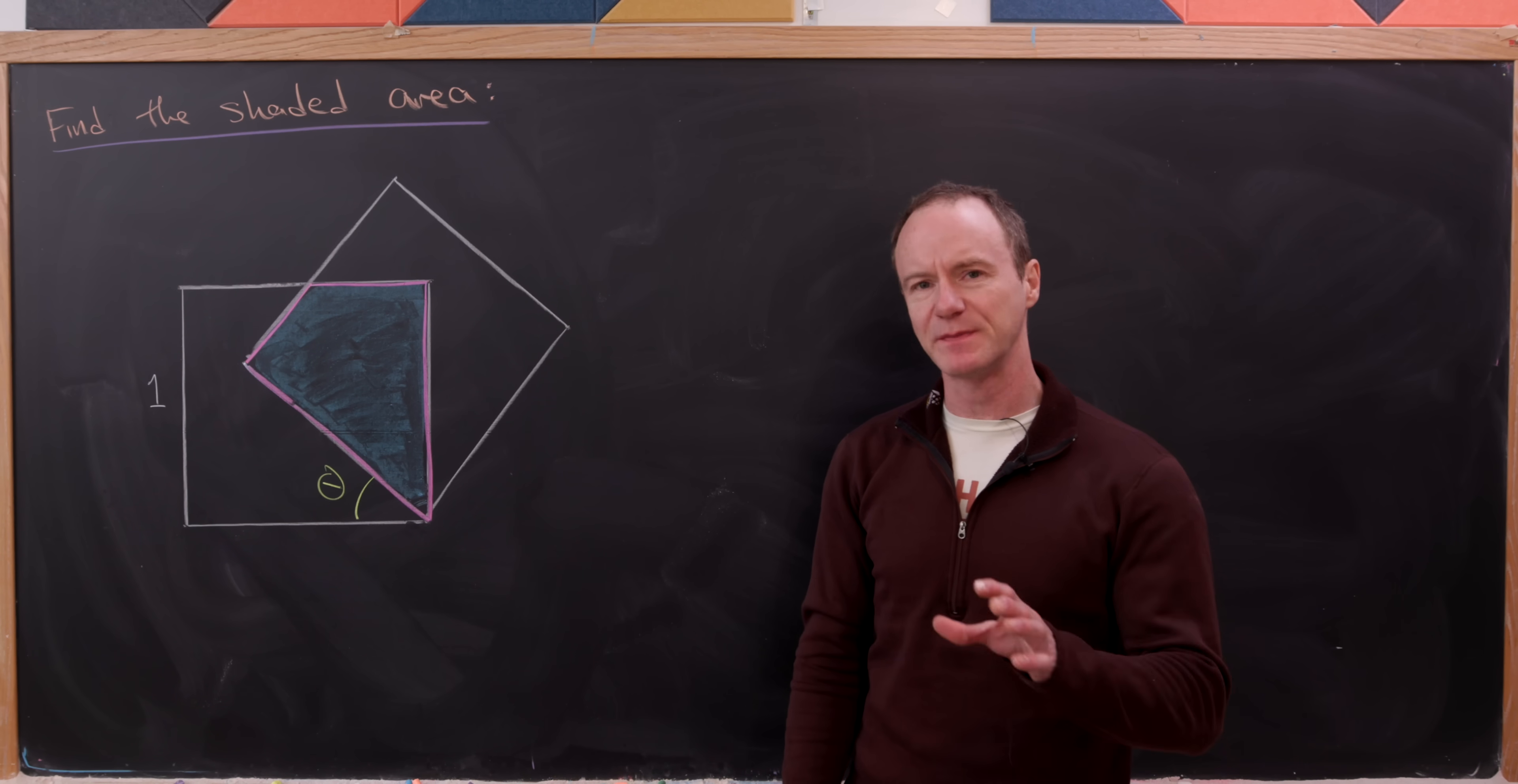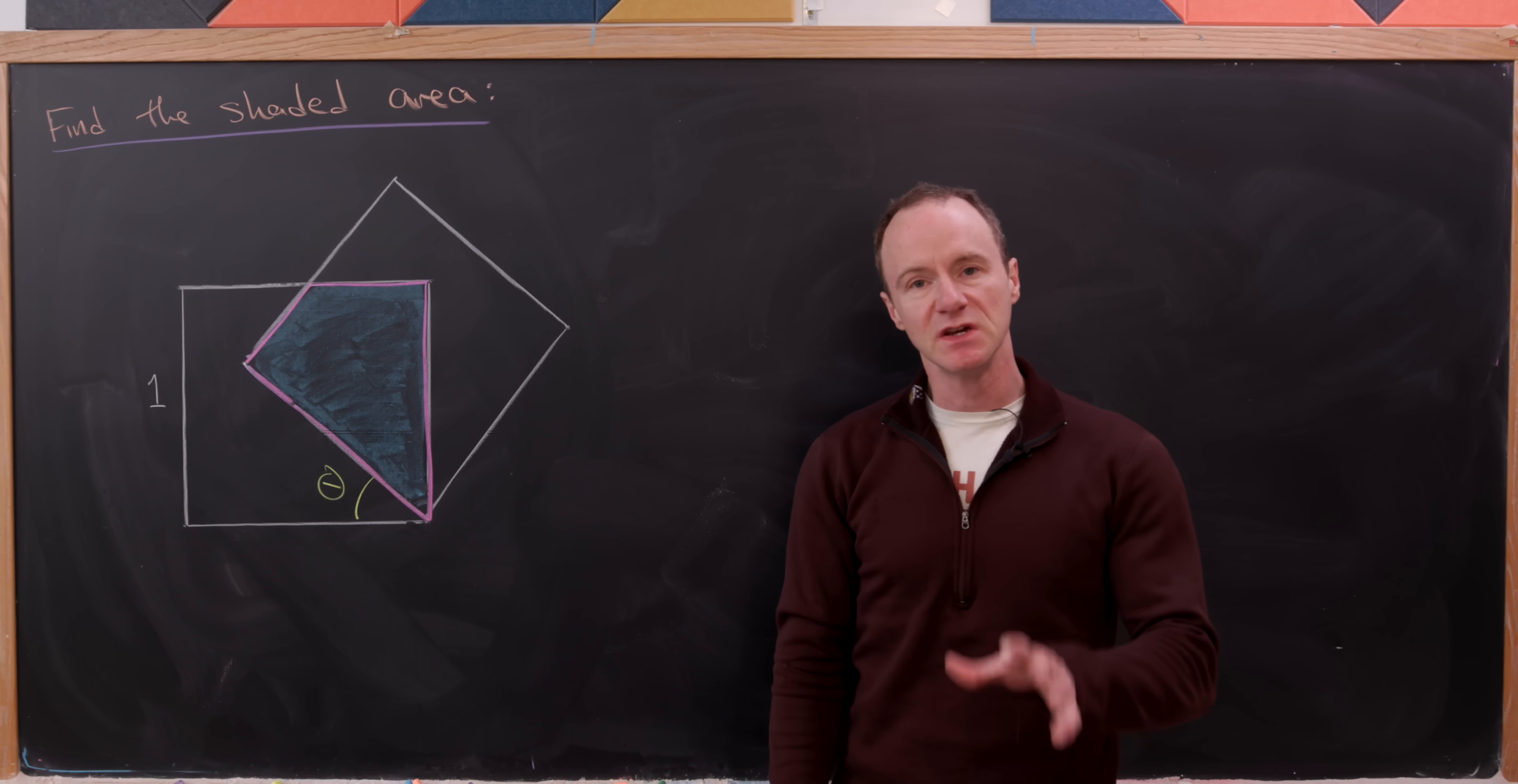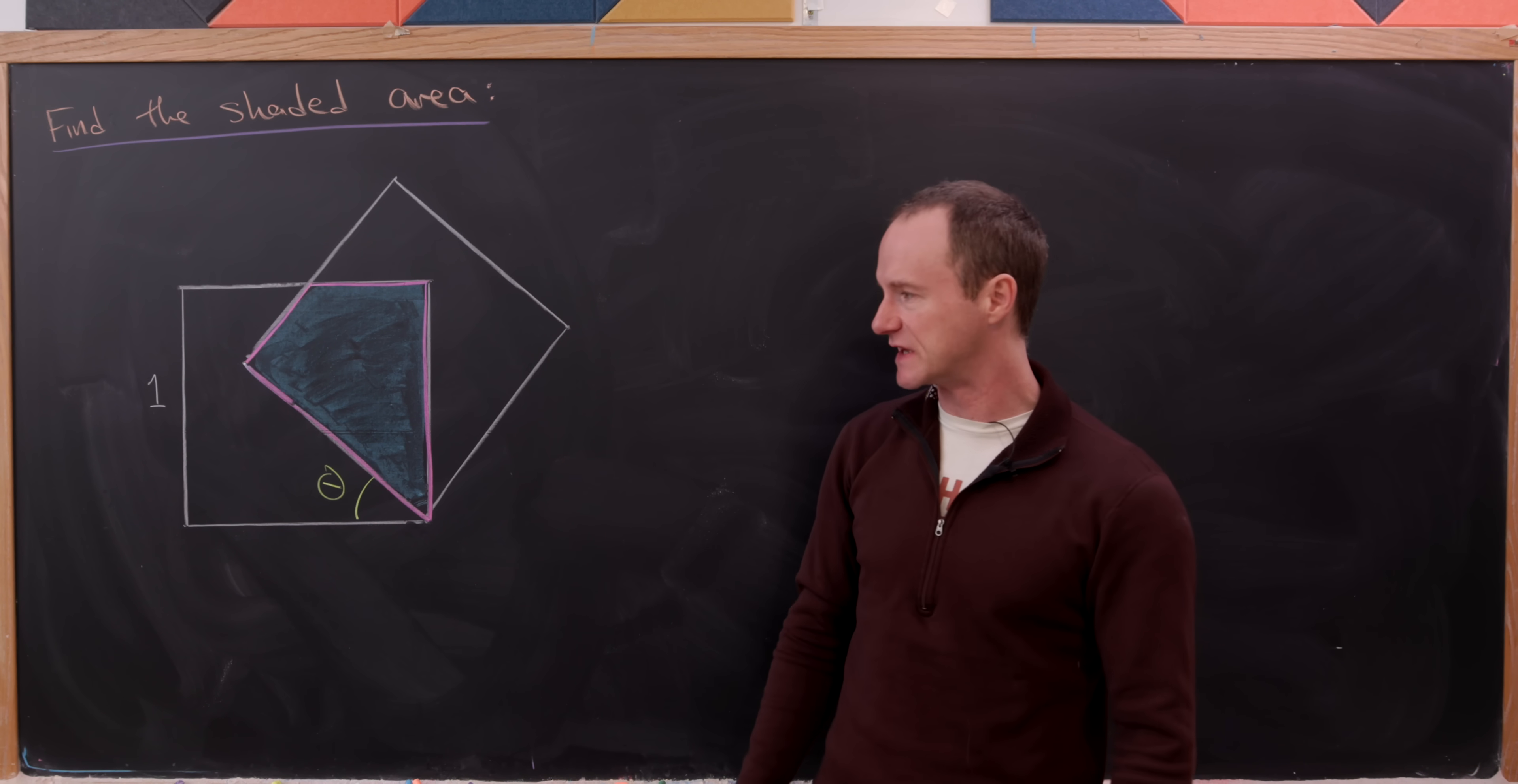Today we've got a classic geometry problem that's been a little bit generalized from the way that you normally see this. Let's suppose that we've got a square that has side length 1. We'll call that a unit square.